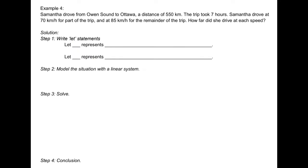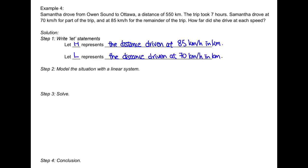Example 4: Samantha drove from Owensown to Ottawa, a distance of 550 kilometers, and the trip took 7 hours. She drove at 70 km/h for part of the trip and at 85 km/h for the remainder. We let H represent the distance driven at 85 km/h and L represent the distance driven at 70 km/h. Since the total distance is 550 km, H plus L equals 550.